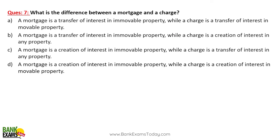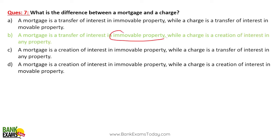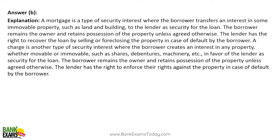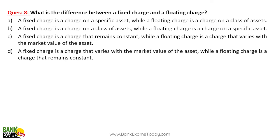What is the difference between mortgage and a charge? Mortgage is a transfer of interest in immovable property, while a charge is the creation of interest in any property. For fixed vs floating: a fixed charge is on a specific asset — for example land, building, or a house — while a floating charge is on a class of assets, for example inventory.